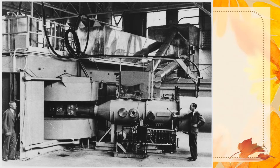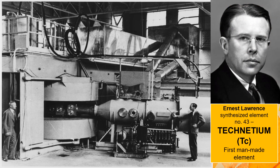It is used to synthesize new elements. In 1937, American physicist Ernest Lawrence synthesized the element with atomic number 43 using a linear particle accelerator. He bombarded molybdenum, with atomic number 42, with fast-moving neutrons. The newly synthesized element was named technetium, or Tc, after the Greek word technetos meaning artificial. Tc was the first man-made element.